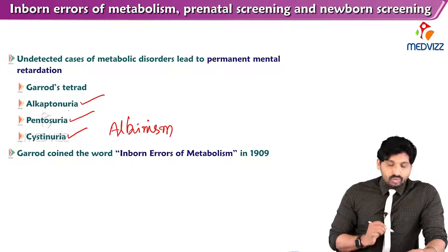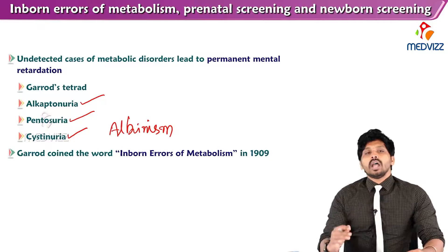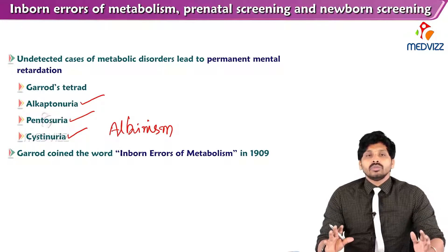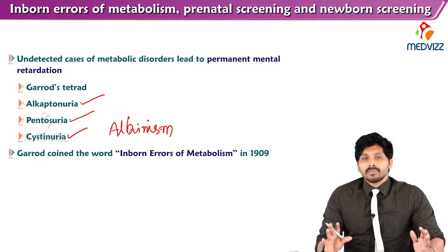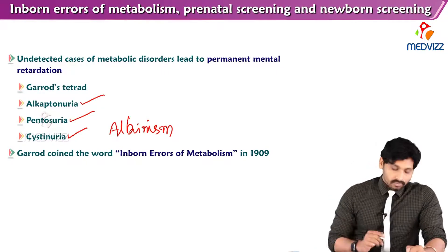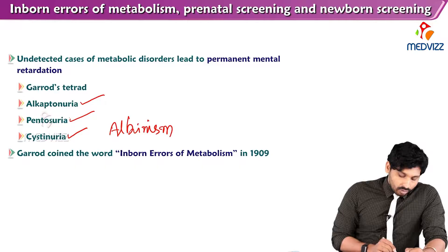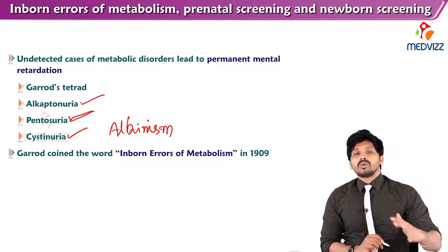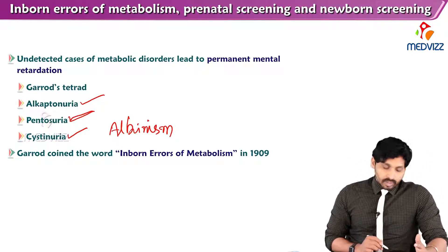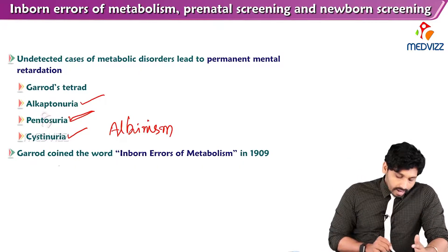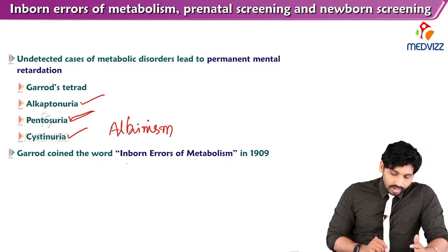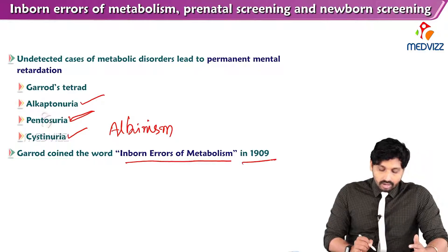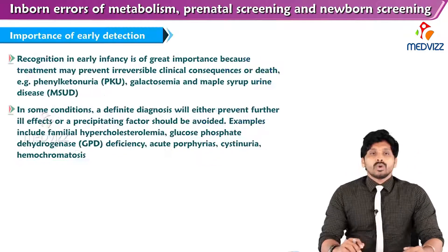Alkaptonuria, cystinuria, and albinism are all related to inborn errors of protein metabolism, whereas pentosuria is related to carbohydrate metabolism. Garrod coined the term 'inborn errors of metabolism' in the year 1909.